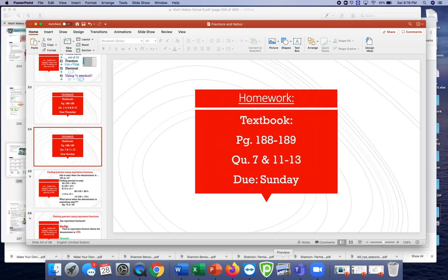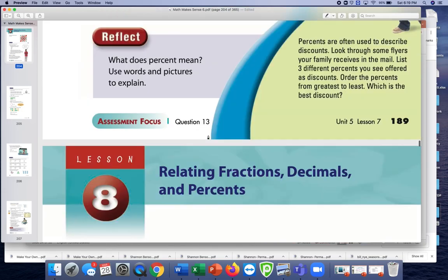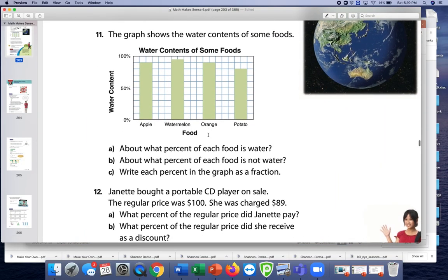This was your homework from yesterday. We had to do questions 11 through 13. We had to say about what percent of each food is water. So we had to write, it says about, but really we can tell pretty much exactly.